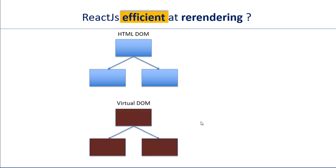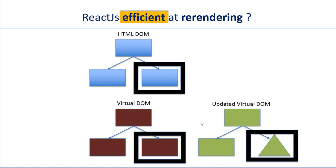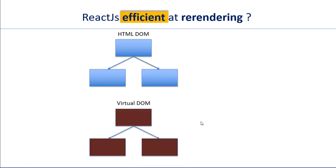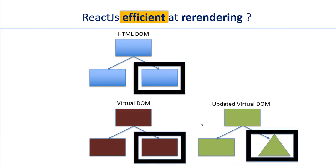The React.js library then calculates the most efficient way to update the HTML DOM to reflect these changes. This ends up being much faster than regenerating the entire HTML DOM from the top.